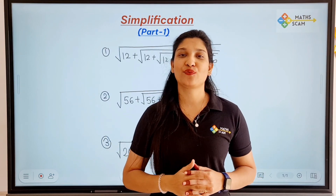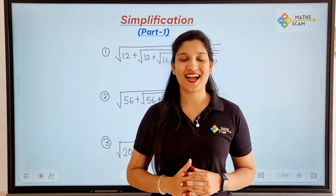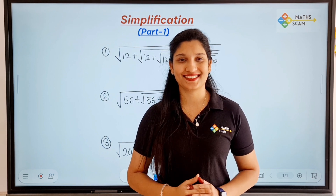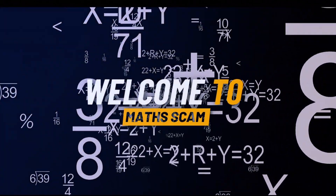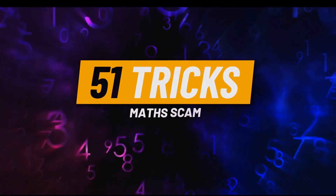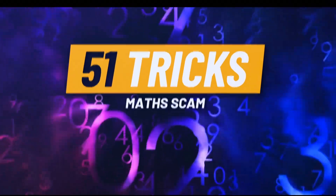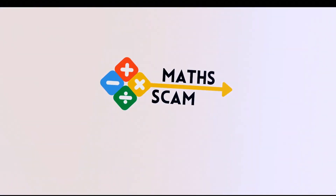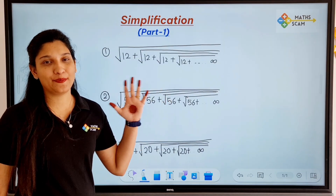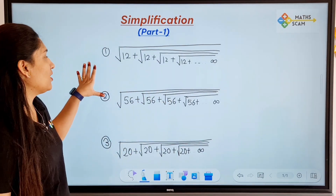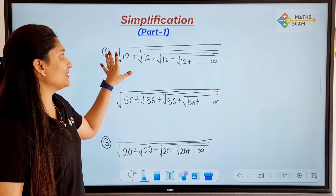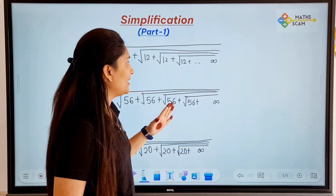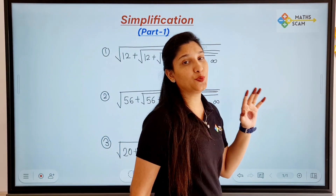Namaste everyone! Welcome to our 51 Tricks of Maths course and today's topic is Simplification Part 1. The first question you can see is: under root 12 plus under root 12 plus under root 12 plus under root 12, up to infinity.